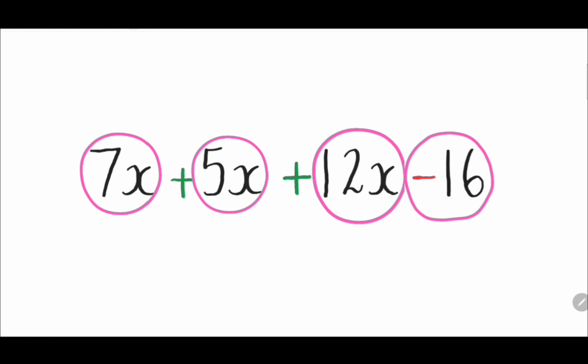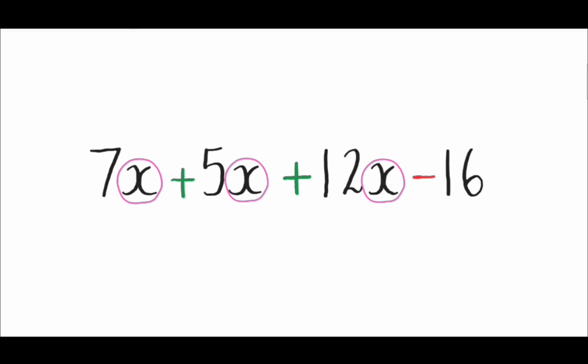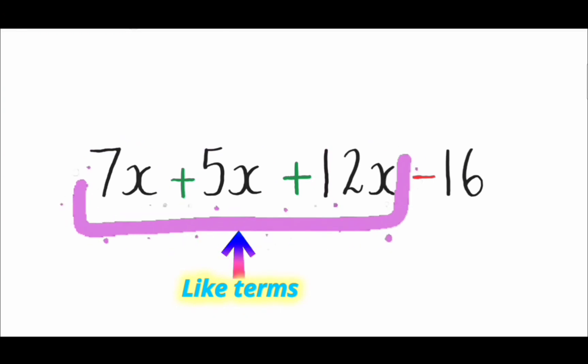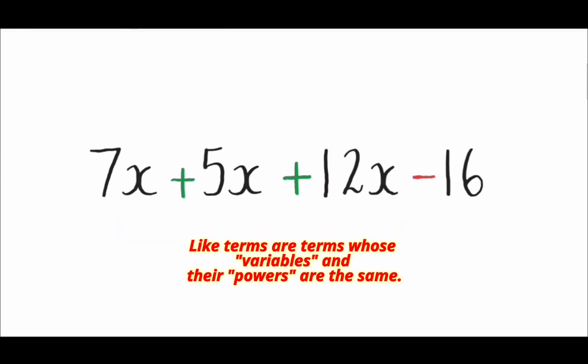For example, the expression 7x + 5x + 12x - 16 has 4 terms. The first three terms have the same variable x and their powers are 1. We say that 7x, 5x, and 12x are like terms. Hence, like terms are terms whose variables and their powers are the same.